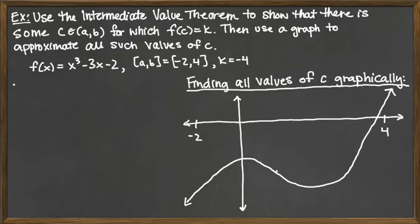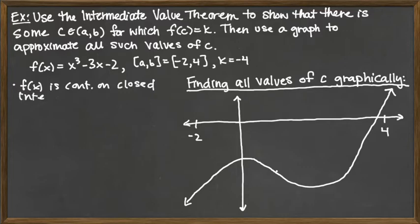Let's take a look at this function. It's a polynomial, and polynomials are continuous everywhere, so in particular they're going to be continuous on a closed interval. We can go ahead and say that f(x) is continuous on the closed interval negative 2 to 4. There wasn't really anything to show there — it was just acknowledging that continuity was important to assess first.